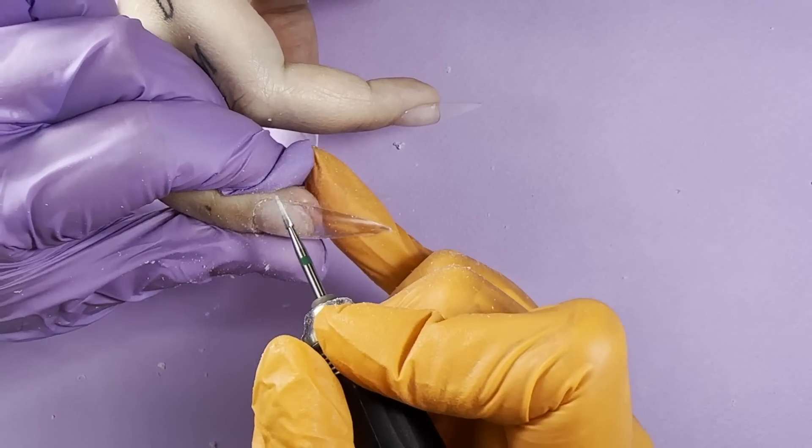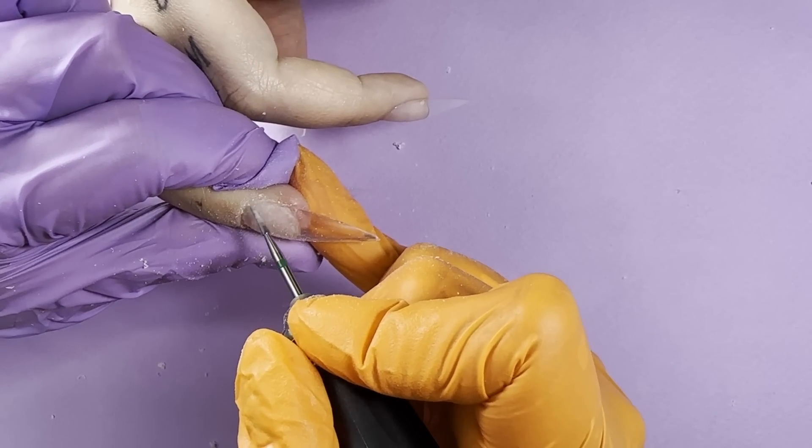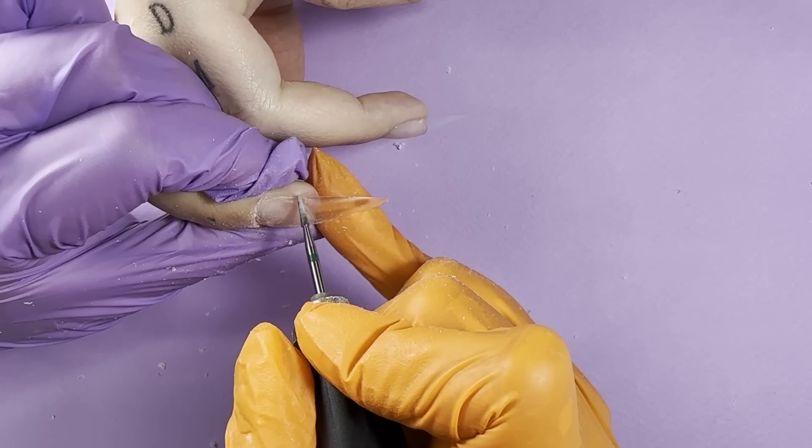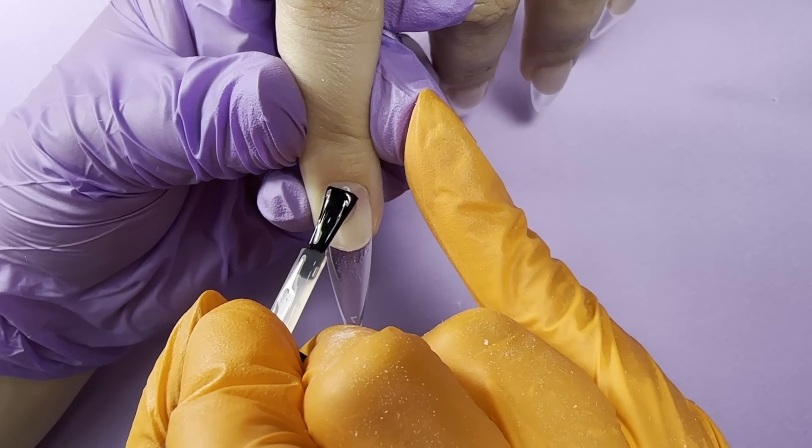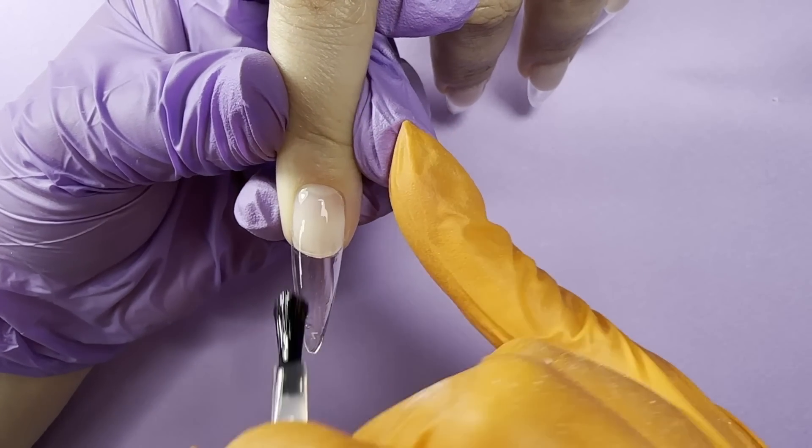And the first solution is definitely having long nails, because the longer nails you have, the more product you can add to the apex area without making them look bulky. That's why we decided to do soft gel tips.